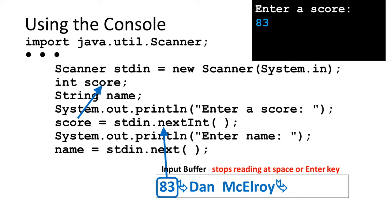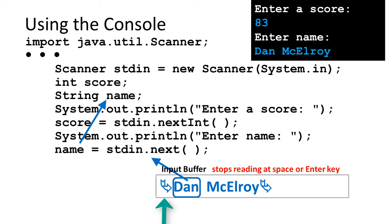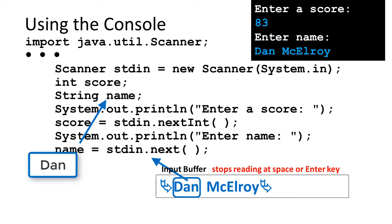The ASCII characters 8 and 3 are read from the input buffer by stdin.nextInt(), which stops collecting characters when it sees a whitespace character. The ASCII characters 8 and 3 are converted into an integer since nextInt() was called, and the integer value of 83 is placed into the variable named score by the assignment operator. The characters 8 and 3 are removed from the input buffer. The ASCII code for the enter key was left in the input buffer. Leading whitespace characters are discarded by stdin.next(), which then reads the characters d-a-n from the input buffer, and stops as soon as it sees a whitespace character — the space between the first and last name. Only the word Dan is placed into the string variable.